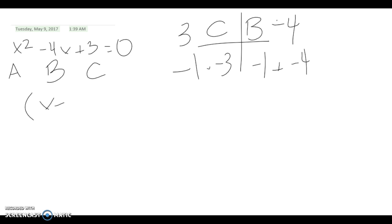X minus 1 and x minus 3. Since it equals 0, we'll have x minus 1 equals 0 and x minus 3 equals 0. Plus 1 on both sides for this one to get x by itself, and it equals 1.